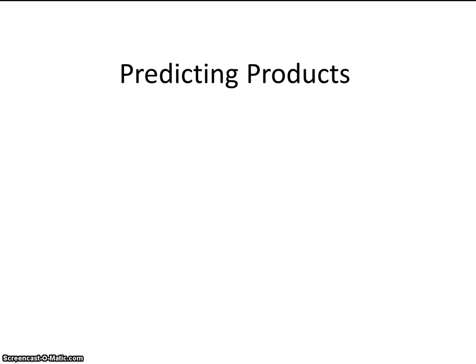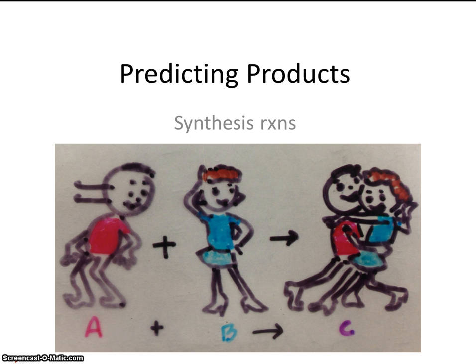Now we'll be predicting products for several different types of reactions, but in this video, we're going to look specifically at synthesis reactions. Maybe this cartoon chemistry can help us out. So in a synthesis reaction, we'll be synthesizing something. In this case, we have guy A plus girl B come together to make a couple, couple C.